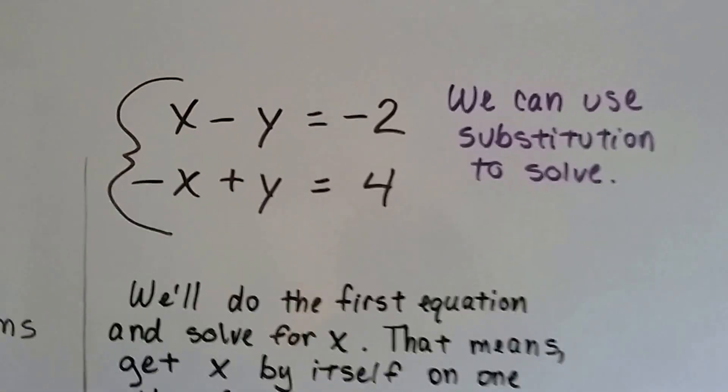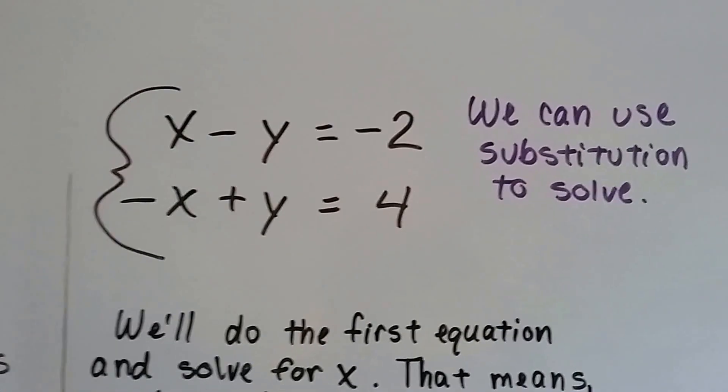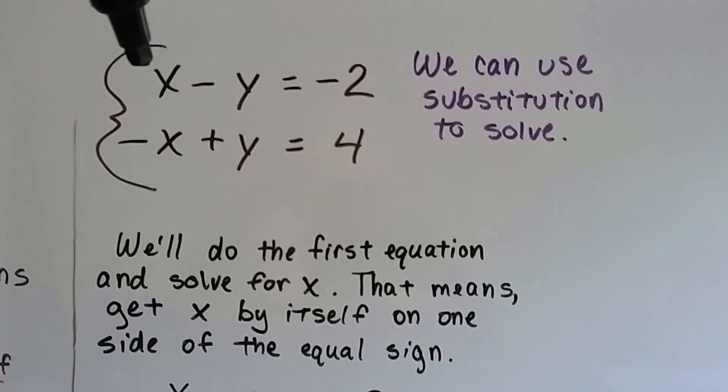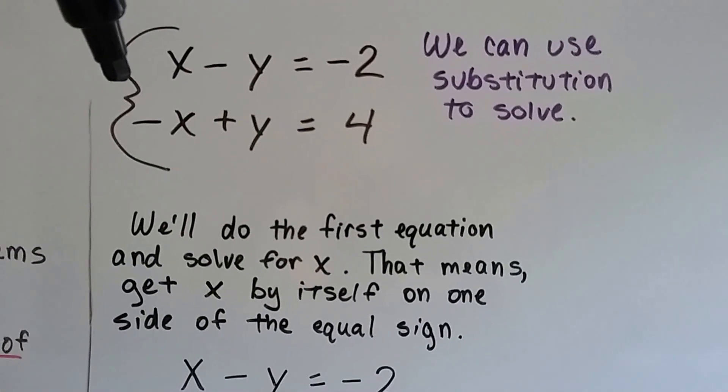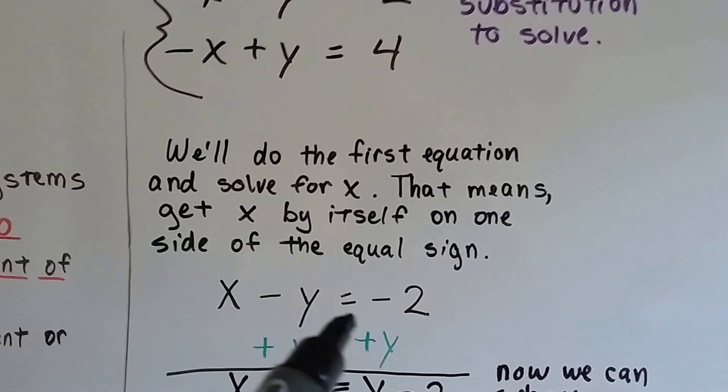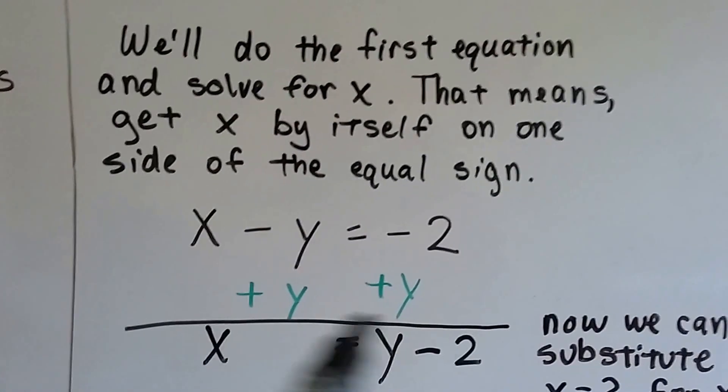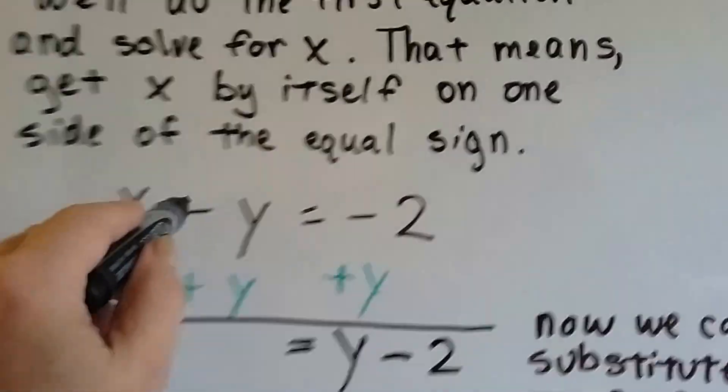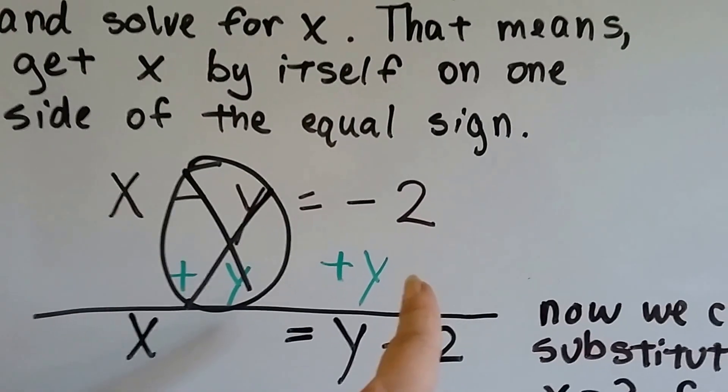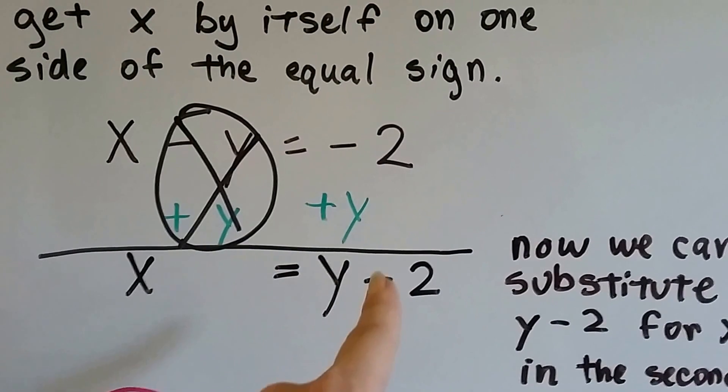So here's our system of equations here. And we're going to use substitution to solve this. So the first thing we're going to do is take the first equation and solve for x. And that means get x by itself on one side of the equal sign. So we've got x minus y equals negative 2. So we're going to add y to each side. And that's going to get rid of this y here and put it on this side of the equal sign with the negative 2. Now we have x equals y minus 2.